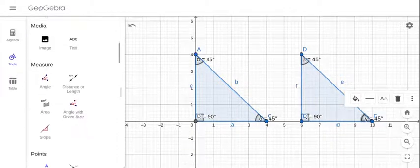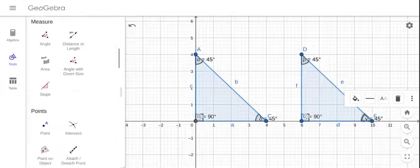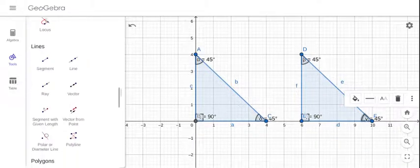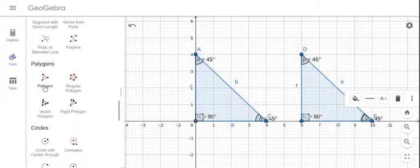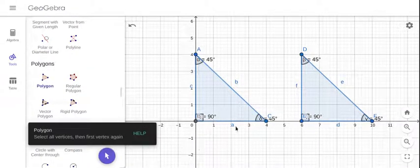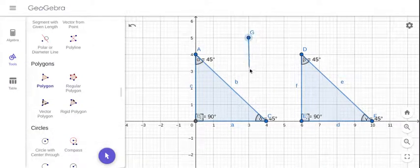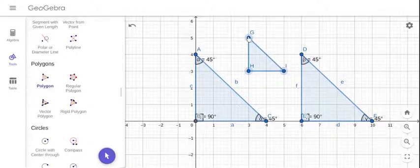But let's see if I can create a triangle, a right angle triangle. Maybe I'll create right here. And now as you can see this is one of the right angles.